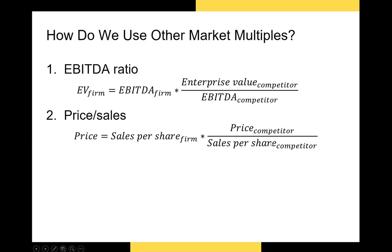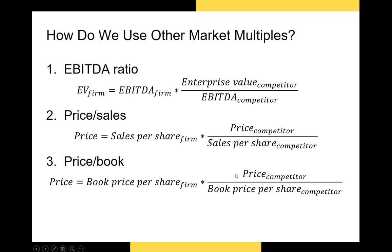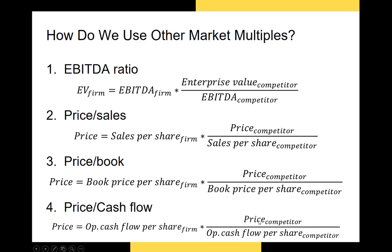For the price-to-sales ratio, we take the competitor's price-to-sales ratio and multiply it by the sales per share of our target firm to get an intrinsic price per share. The price-to-book ratio works the same way — take a competitor's price-to-book ratio, multiply by the book price per share of our target firm's shares, and get the intrinsic price per share. For price-to-operating-cash-flow, we take the competitor's ratio and multiply by our target firm's operating cash flow per share.